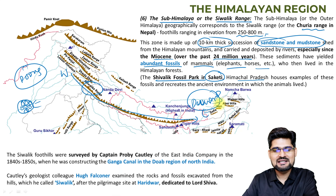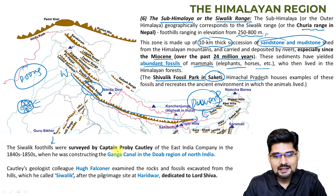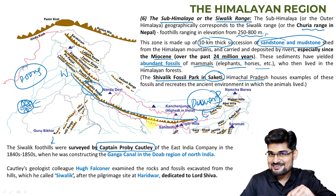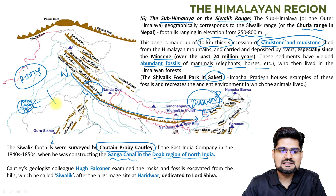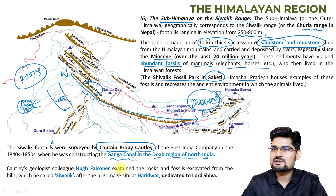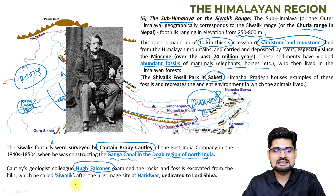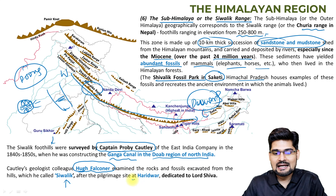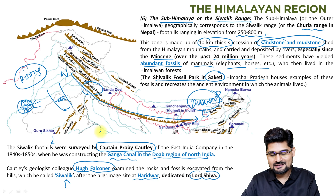The Shivalik Fossil Park in Saketi, Himachal Pradesh, houses these fossils and is open to visitors. The Shivalik foothills were surveyed by Captain Proby Cautley of the East India Company, who was working on the Ganga Canal and the Doab region of North India. However, it was his colleague Hugh Falconer who examined the rocks and fossils and named them 'Shivalik' — named after Lord Shiva, dedicated at Haridwar.